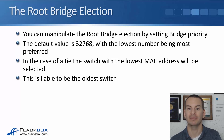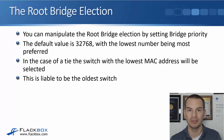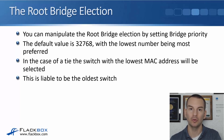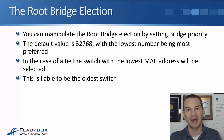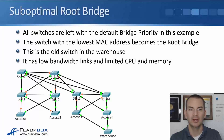The default bridge priority value is 32768 and the lowest number is preferred. In the case of a tie, the switch with the lowest MAC address will be selected. So if you do not manually set the bridge priority on your switches, they're all going to default to 32768 and the switch with the lowest MAC address will be the root bridge — and that is liable to be the oldest switch in your network. Whenever Cisco makes a new switch, they increment the MAC address, so the lowest MAC address is probably going to be the oldest switch.